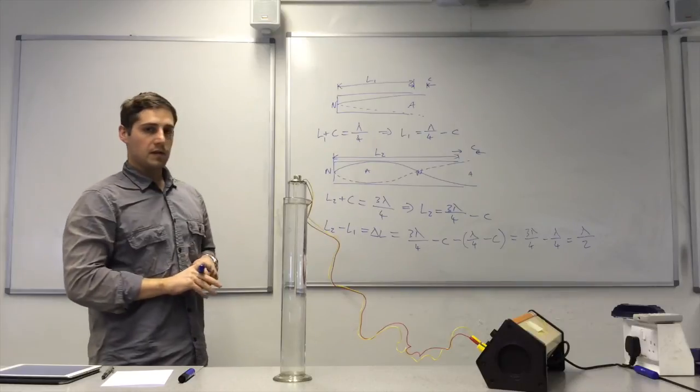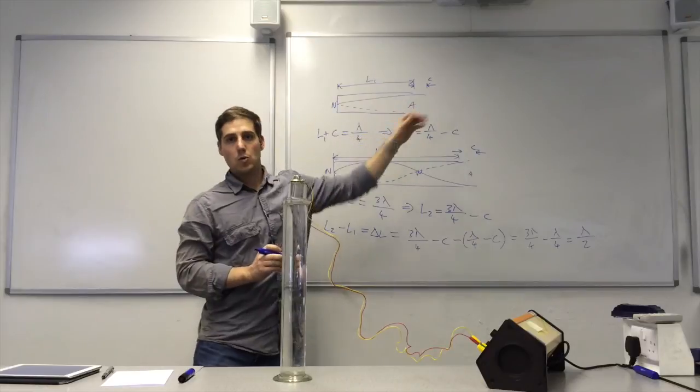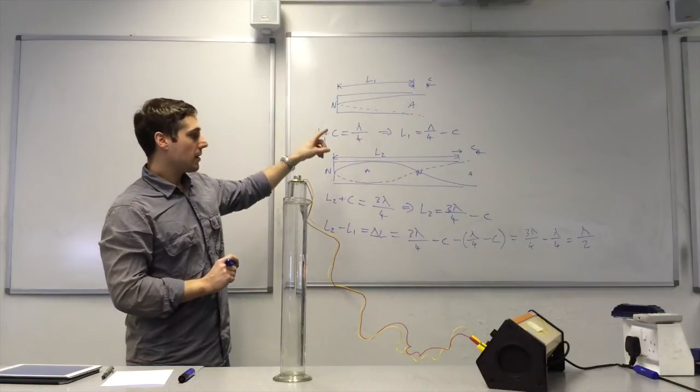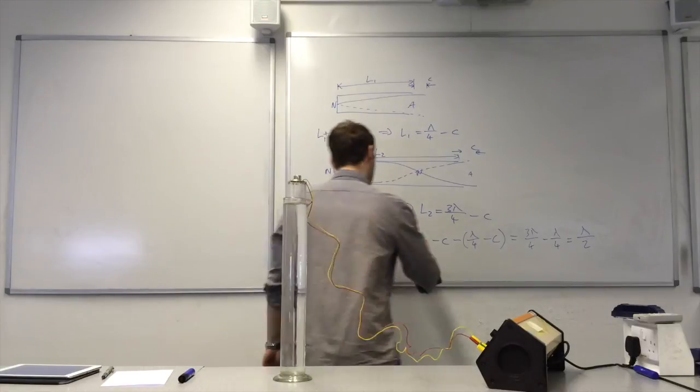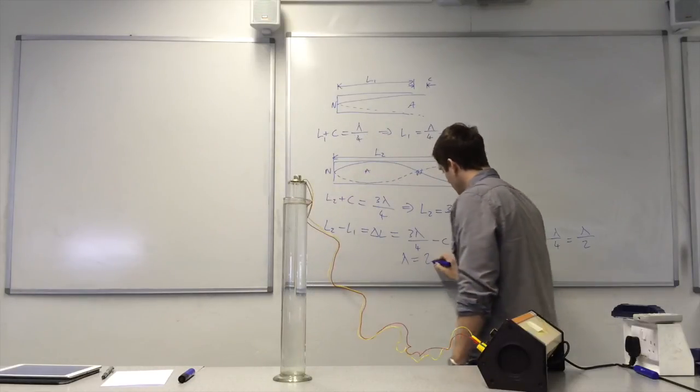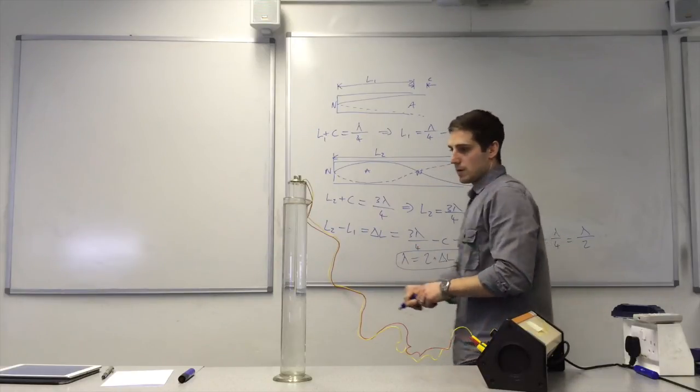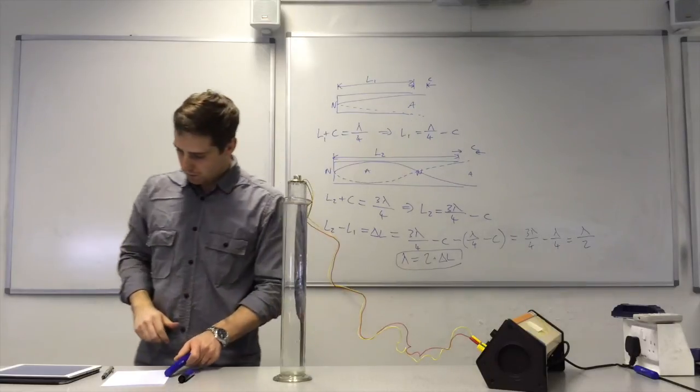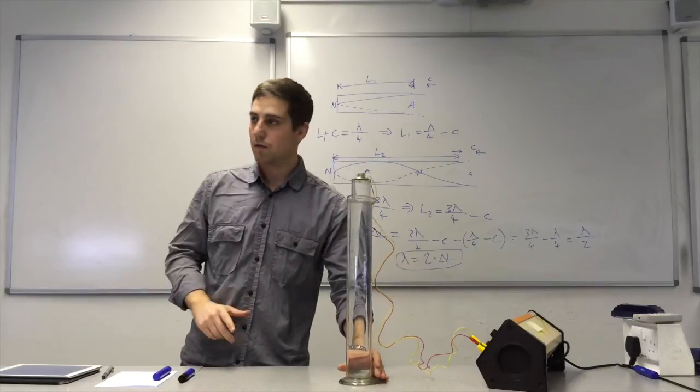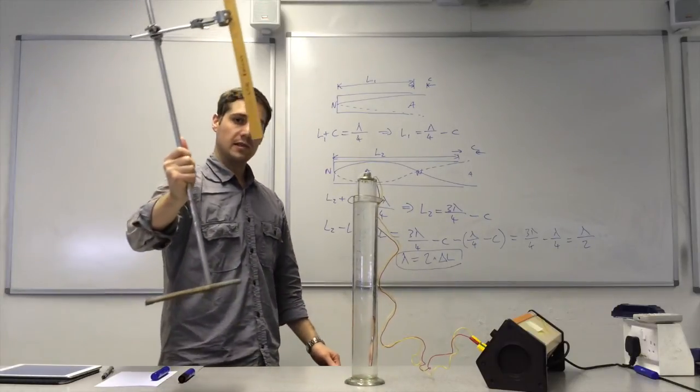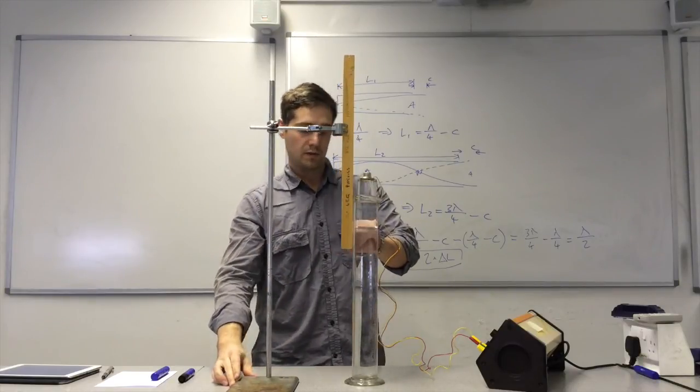So all I need to do now to get a more accurate value for the wavelength than just using one harmonic is work out this difference in the length here. So the wavelength will be equal to 2 times delta L. So that's what I'll do. I'll form those two harmonics and measure the length of the pipe of those harmonics using a ruler here. It's fixed so that it's as vertical as possible.